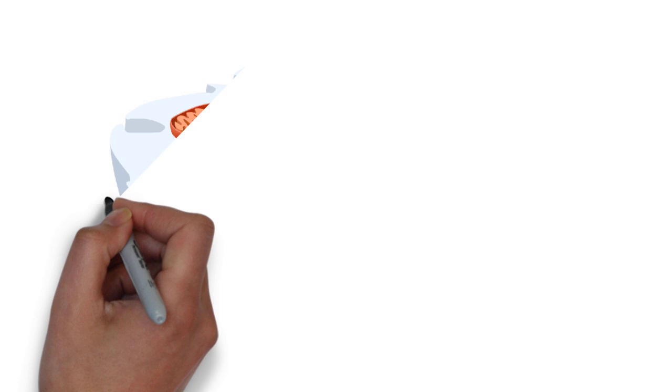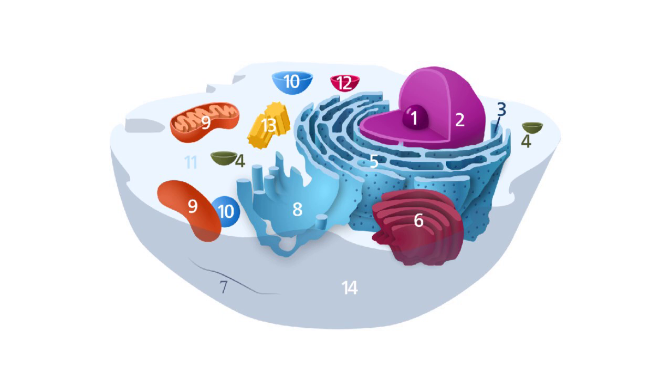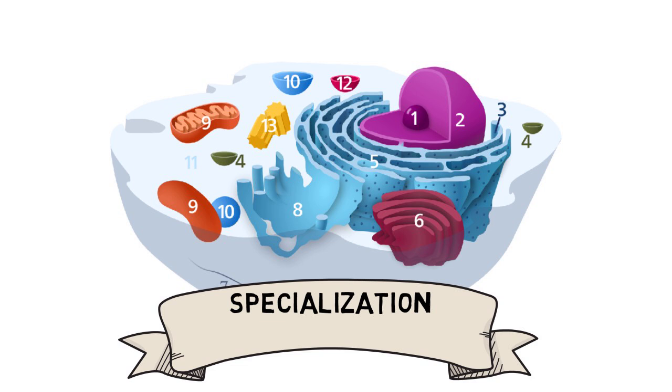Likewise, each organelle in the cell performs a specialized function within the cell. No organelle can replace the function of another organelle. Hence, compartmentalization allows the specialization of functions by each organelle, with every organelle performing its own specific function supporting the cell's survival.